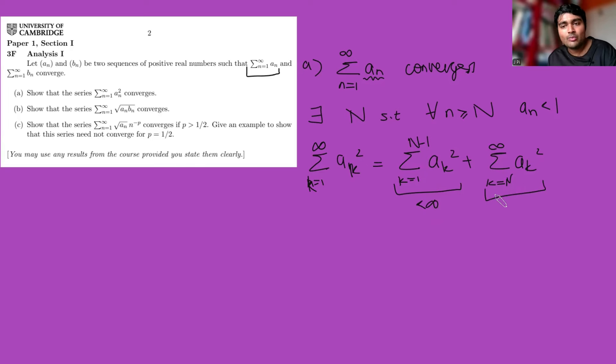How about this thing here? We know that when k is at least N, because of this result here, we know that the a_n's are less than one. But that means when I square them, that's going to be even smaller. So this thing here is going to be less than the sum from k equals N to infinity of a_k, since we know all those terms are less than one. When you square them it makes it smaller. This thing here we know also converges because of what we're told in the question, and so that means the sum of the squares converges.